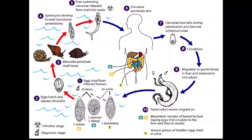Adult male and female worms copulate and live in the mesenteric veins, which vary by species, with a few exceptions. Schistosoma japonicum is found more frequently in the superior mesenteric veins draining the small intestine, while Schistosoma mansoni is found more frequently in the inferior mesenteric veins draining the large intestine.